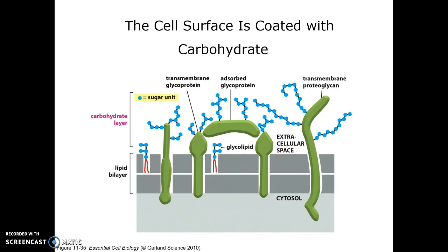These sugars are always in the extracellular state — we don't do glycosylation on the cytosolic side. They are always attached in the lumen of the ER or the lumen of the Golgi, and since membrane asymmetry is maintained, they end up on the outside of the cell.